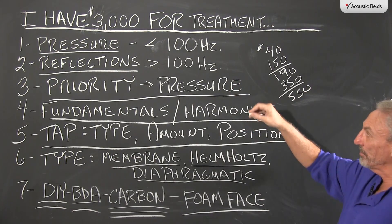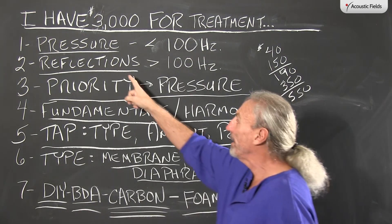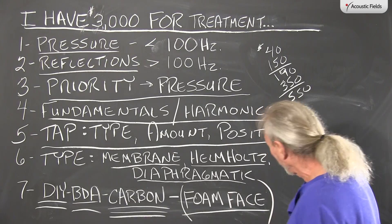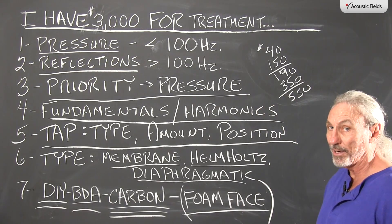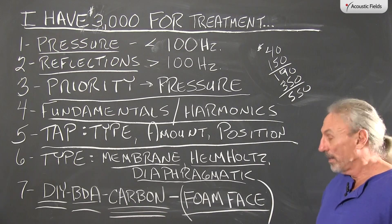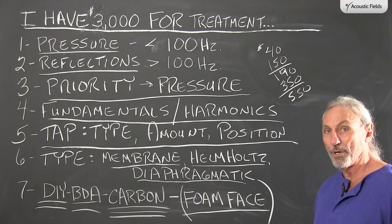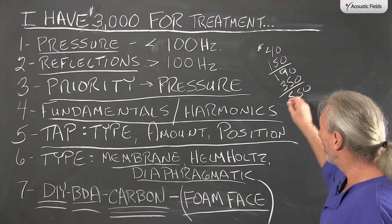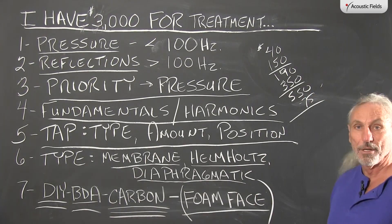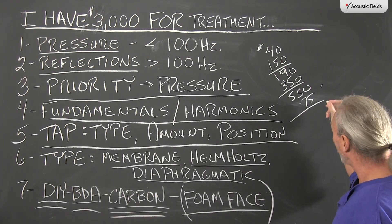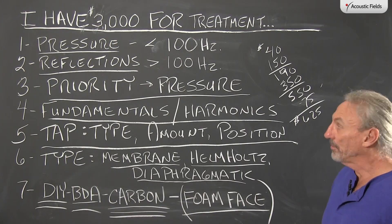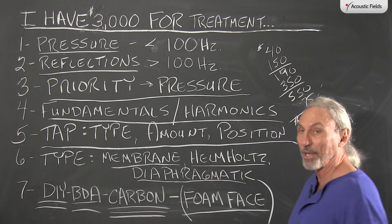If you spend about $2,000 on the low end, you can start managing reflections. You can buy our foam technology — which took eight years to develop — where the rates and levels of absorption are perfect for voice and music. Put the foam on the face of each unit; it runs about $75 per unit. So now you're at about $625 plus labor, and you have a unit that controls both pressure and reflections.